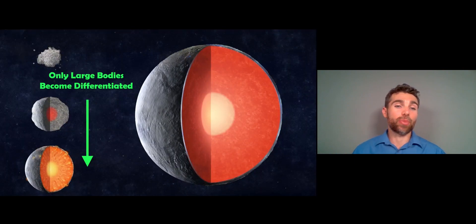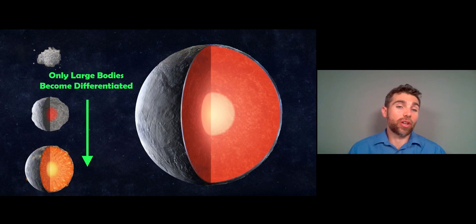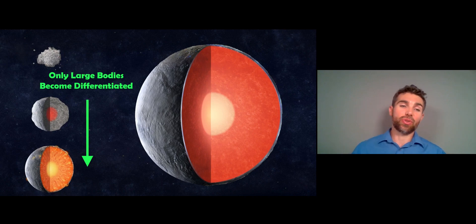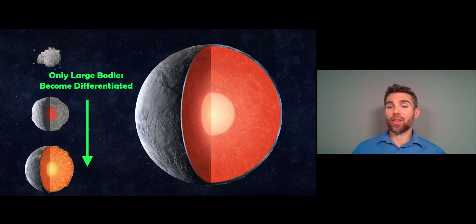Now, only the biggest of objects or the larger objects are going to become differentiated. Planets, basically. Asteroids, those are very small asteroids. They won't have evidence of that. They're just not big enough. They don't have enough heat to become differentiated. So as they get bigger and bigger, they get hotter and hotter because there's more collisions, there's more gravitational force, there's more radioactive material. So they get hotter and they're able to then become differentiated.